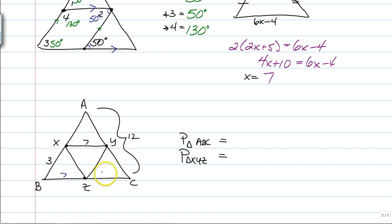So, if this is 7, this is 7, and this is 7. If this is 3, this is 3, and this is 3. If this is 12, that means this is 6, this is 6, and this is 6.